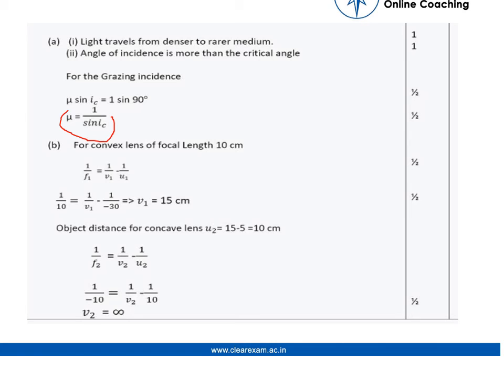Now in the numerical part, we need to find the position of the final image formed by the combination. For the first convex lens of focal length 10 cm, the image distance can be found by applying the lens formula, and it comes out to be 15 cm.